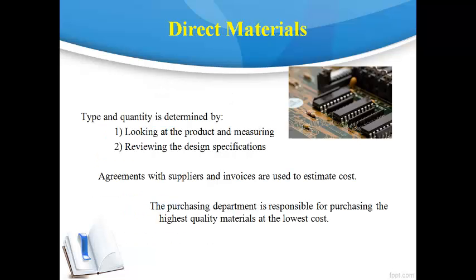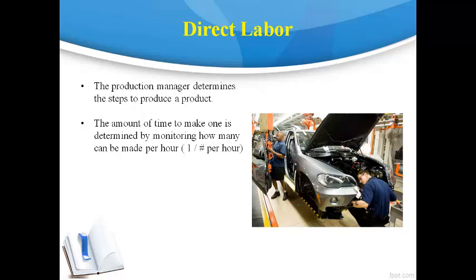Direct material quantity standards are determined by measuring the quantity of material used to make each product or by analyzing design specs. The estimated cost for each quantity is determined by reviewing agreements with suppliers or invoices for previous purchases. The purchasing department is responsible for buying the highest quality materials at the lowest cost. Estimating the cost for direct labor begins with the production manager determining the different steps required to manufacture the product. The accountant monitors how many products go through each step in an hour, then divides that quantity into one to determine how much of an hour is required to make just one product.